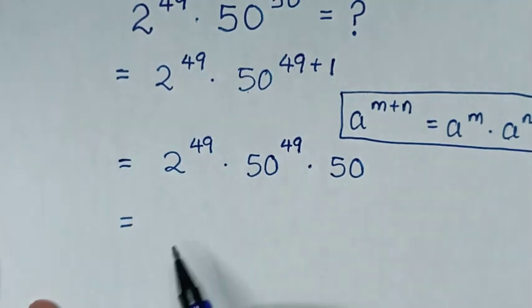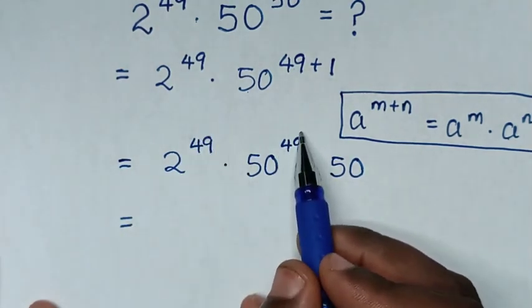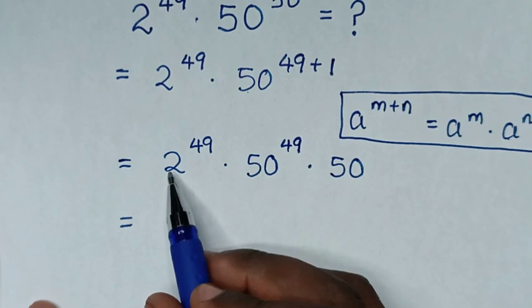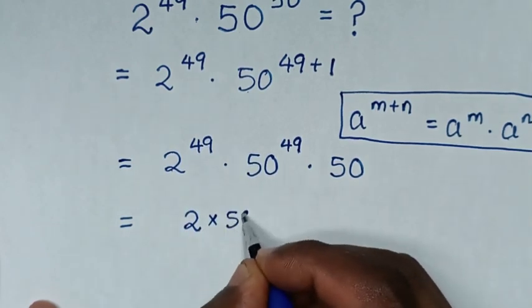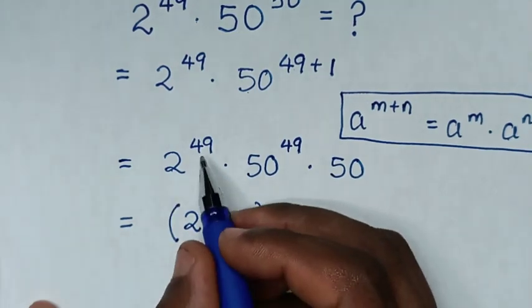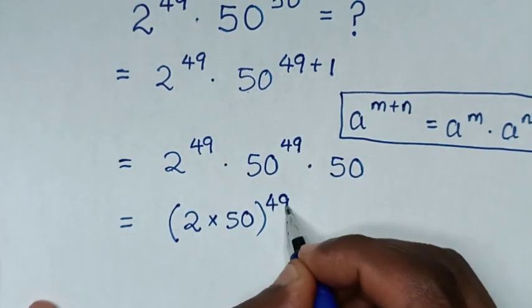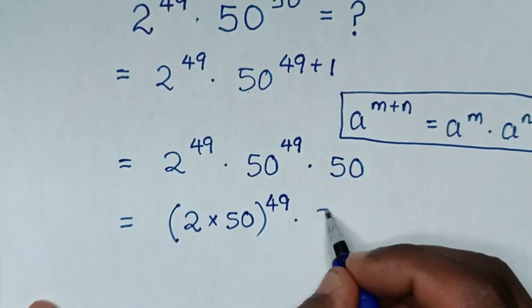Then it will be equal to, in here we'll have same power of 49. So we'll multiply these bases. So it will be 2 times 50 then bracket common power of 49 then times this 50.